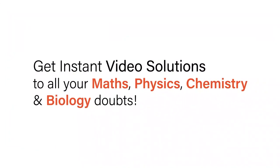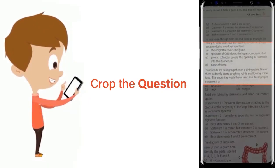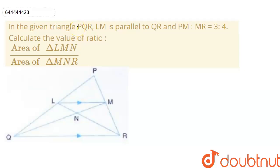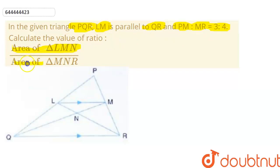Hello everyone. Today we are going to discuss one question on similarity of triangles. We are given a triangle PQR such that LM is parallel to side QR, and the ratio of side PM to side MR is 3:4. From this data, we need to evaluate the ratio of the area of triangle LMN to the area of triangle MNR.